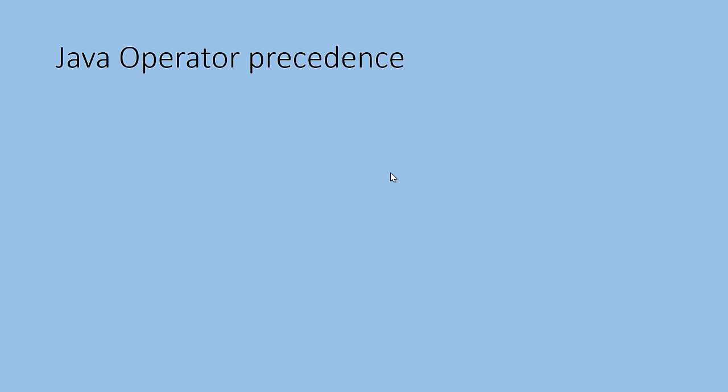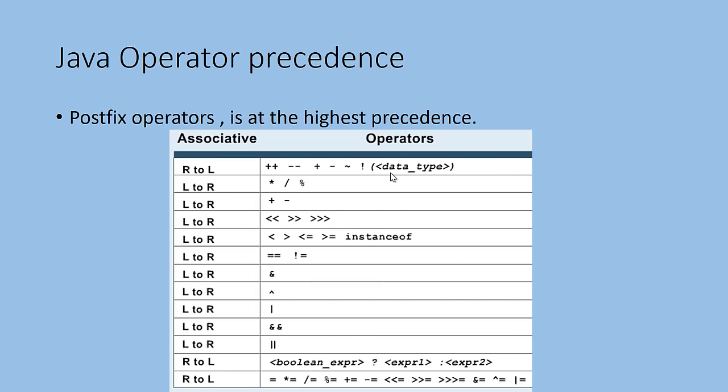In Java, I mean not only in Java but in any programming language, you should always understand the operator precedence. Who gets the highest priority? Always postfix or prefix operators get the highest priority, followed by the unary operators. And also there is another thing called associativity - left to right or right to left.